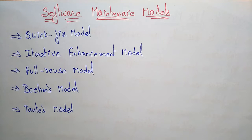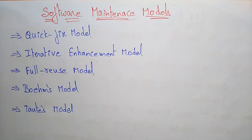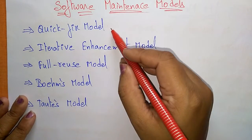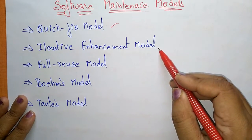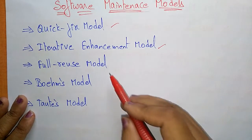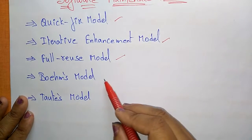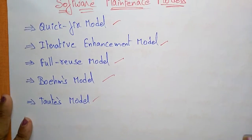Hi students, coming to the next topic — the software maintenance model. In the previous videos we discussed about the different maintenance activities and the maintenance process. Now let us see the software maintenance models. There are five different models present for software maintenance: the quick fix model, iterative enhancement model, full reuse model, BOMS model, and TOTUS model.